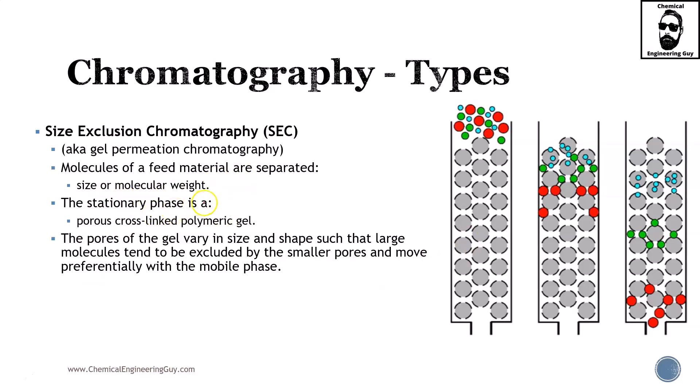Molecules of a feed material are separated essentially by their size or molecular weight. Typically, molecular weight is mostly associated with size. The stationary phase is going to be a porous cross-linked polymeric gel. The pores of the gel vary in size and shape such that the large molecules tend to be excluded by the smaller pores and they will start moving preferentially with the mobile phase.